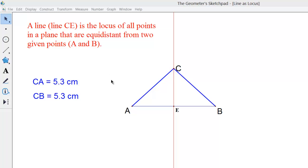Now I've constructed this diagram so that E is the midpoint of segment AB and line CE is the perpendicular bisector of segment AB.